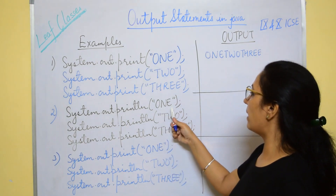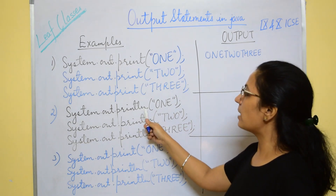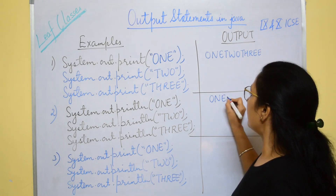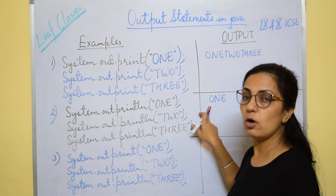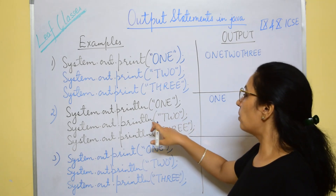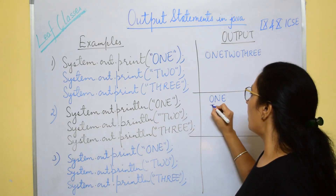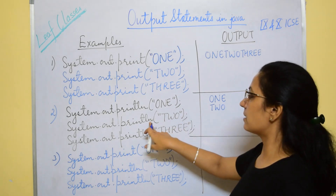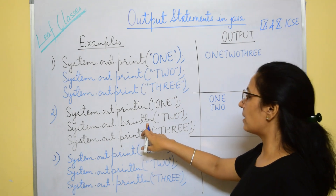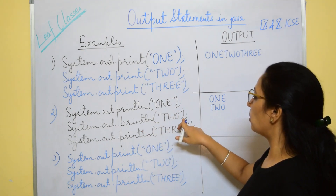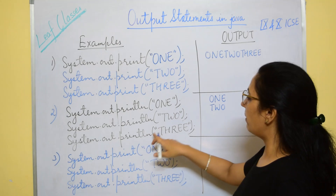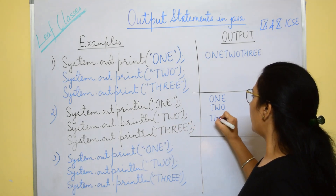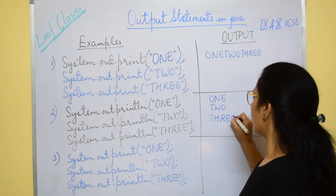In the next example, System.out.println("1") displays 1 and then the cursor moves to the beginning of the next line. The next statement System.out.println("2") displays 2 on the next line. Since both use println, after printing each value the cursor is shifted to the beginning of a new line, so the output is 1 and 2 on separate lines.